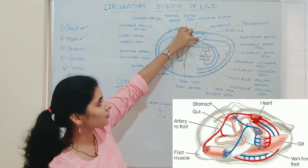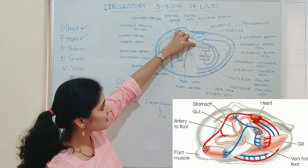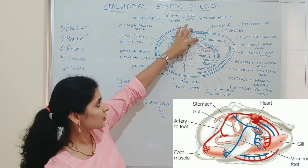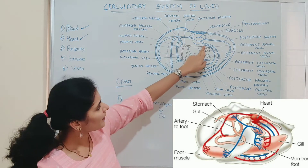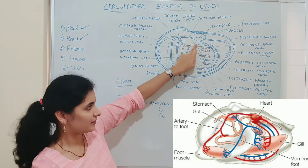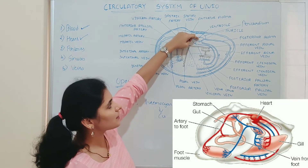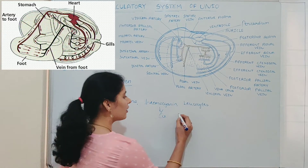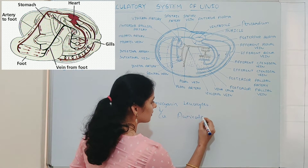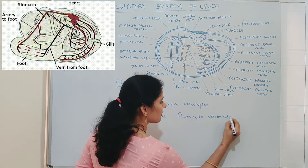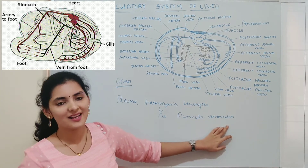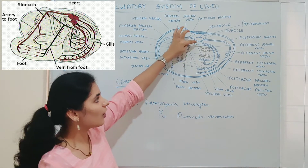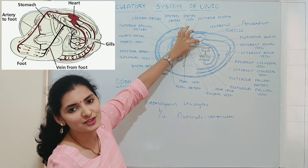The auricle is present ventral to the ventricle. As seen in the diagram, it is a triangular, thin-walled, highly distensible structure. The broader base of the auricle joins with the wall of the pericardium, and dorsally the auricle opens into the ventricle through an opening known as the auriculoventricular aperture, which is guarded by a valve. This valve ensures unidirectional flow of blood from auricle to ventricle, but not from ventricle to auricle.